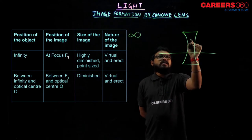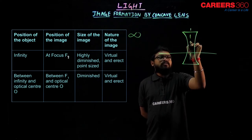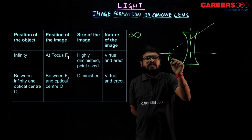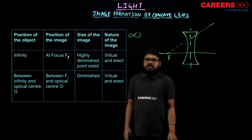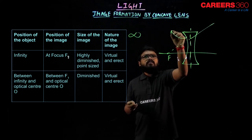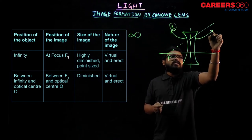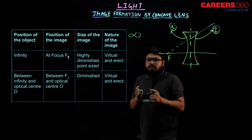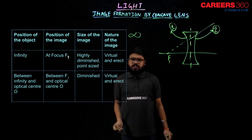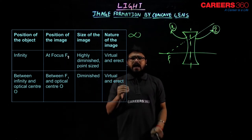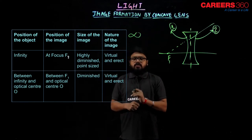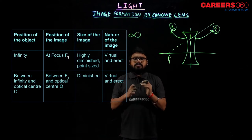When the ray is parallel to the principal axis, they diverge after refracting from the lens. They seem to meet at the focus. Since this is our surface 1 — the surface which is facing the object — and the other side of the lens is called surface 2, the position of the image would be at focus F1, that is on the left-hand side, the same side as the object. The size of the image is highly diminished, point size, because all the rays meet at that particular point and the image formed would be very small.